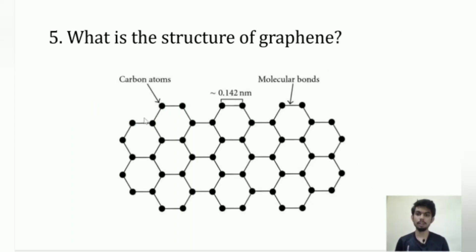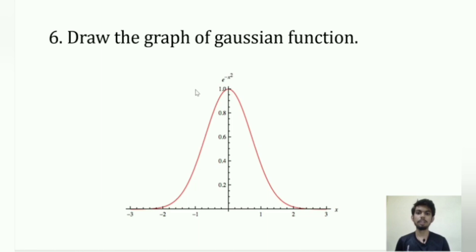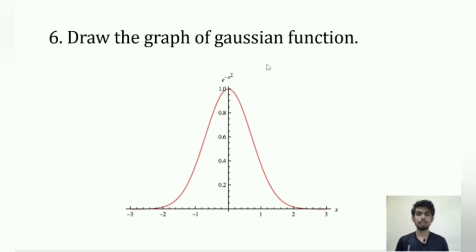Next they asked me about the structure of graphene — it has a honeycomb structure with carbon atoms and molecular bonds. Then they asked me to draw the graph of e^(−x²). This is a Gaussian function, and the graph is the well-known bell-shaped curve. You might not always get well-known functions, so I suggest practicing drawing graphs for any random function, as happened in one of my IISER interviews where I was given a very unfamiliar function.